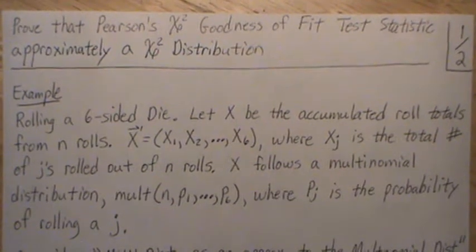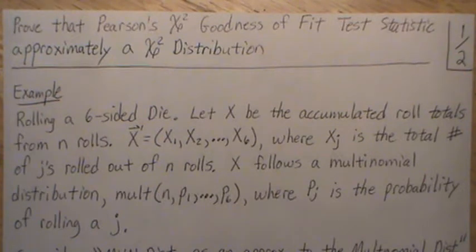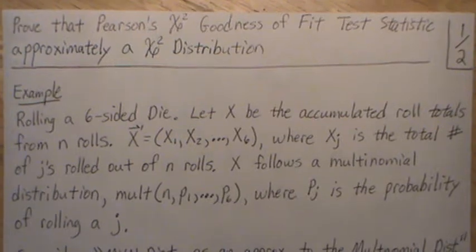Hello. In this video we're going to prove that the Pearson's chi-square goodness of fit test statistic approximately follows a chi-square distribution. I'm going to keep it in the hypothesis testing playlist but I'm also going to put it in the transformations playlist.